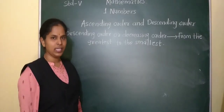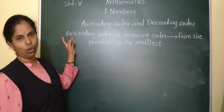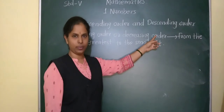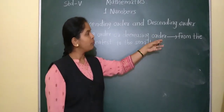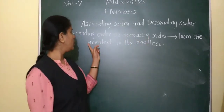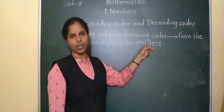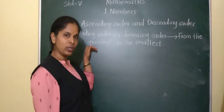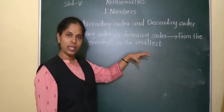After ascending order, we will learn descending order. Descending order is also called decreasing order. In this, we are arranging the numbers from the greatest to the smallest — first we write the greatest number, then smaller, and then the smallest.